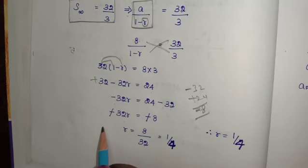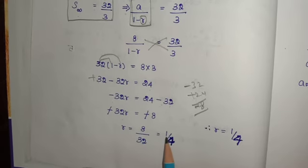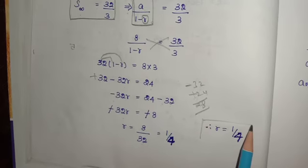The negative signs cancel out. So r = 8/32. Simplifying: 8 goes into 32 four times. Therefore r = 1/4.